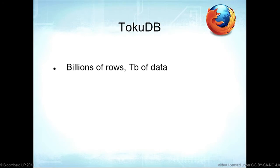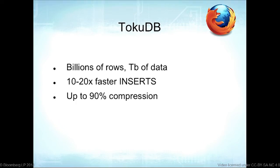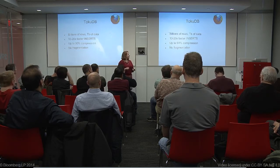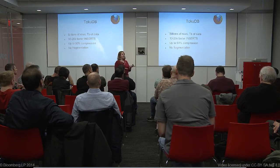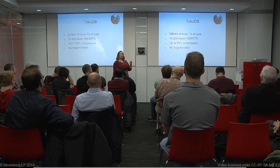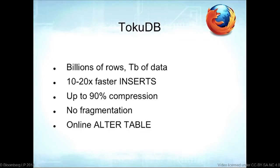TokuDB is great for billions of rows and terabytes of data — 10 to 20 times faster for inserts, fully open source, up to 90% compression, and minimal fragmentation due to how they handle indexing. Instead of regular B-trees, they use something called fractal trees. There are YouTube videos explaining fractal trees. It also has completely online ALTER TABLE — adding columns, adding indexes — all online.